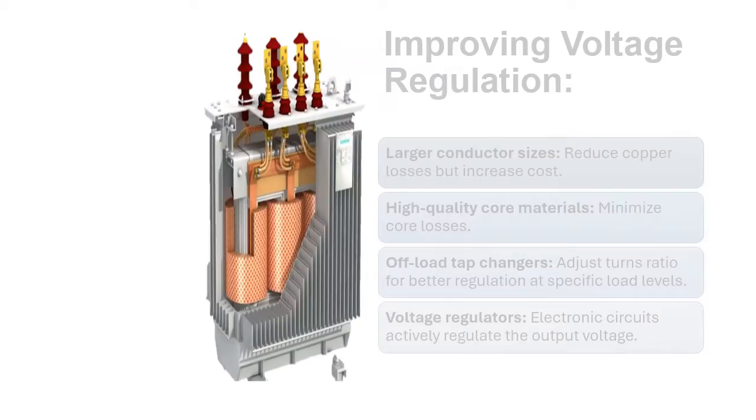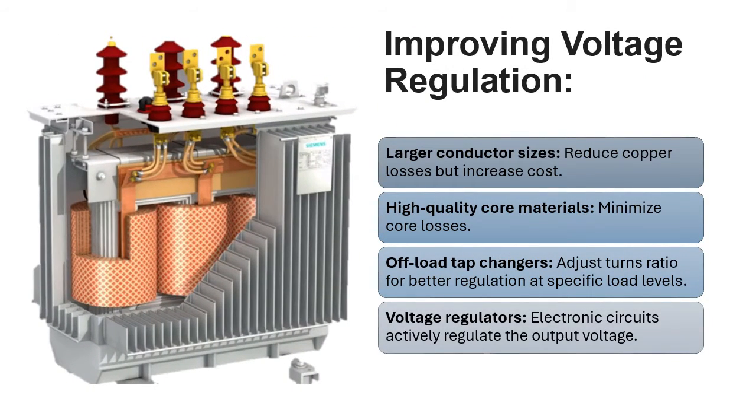Improving voltage regulation: Larger conductor sizes reduce copper losses but increase cost. High quality core materials minimize core losses. Offload tap changes adjust turns ratio for better regulation at specific load levels. Voltage regulators with electronic circuits actively regulate the output voltage.